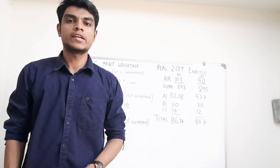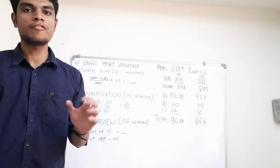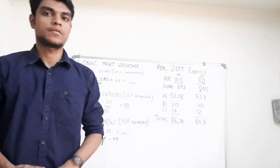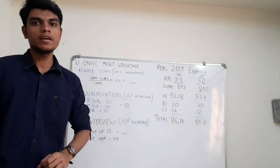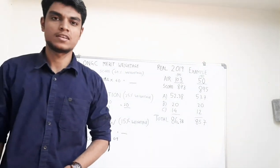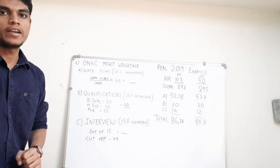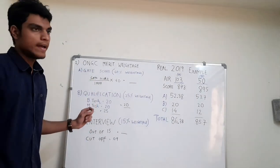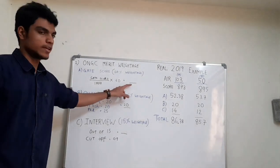ONGC takes into account three parameters while formulating the final merit list. First, GATE score parameter, second qualification and third interview marks. GATE score parameter is given 60% weightage and it's calculated as given formula, GATE score divided by 1000 into 60.